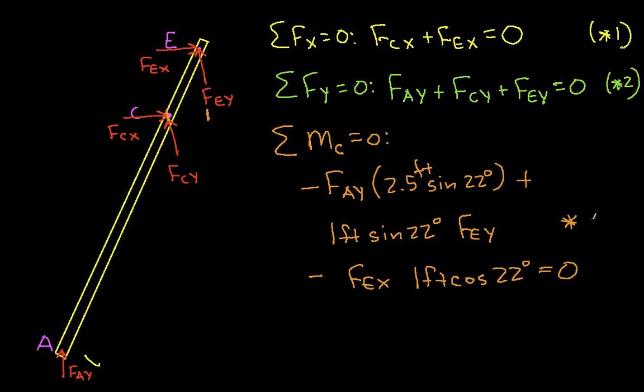So we'll call this equation star three because we can't solve this equation for any unknowns. We know FAY but we don't know the other four unknowns. And since we only have three equations, we can't solve for them.